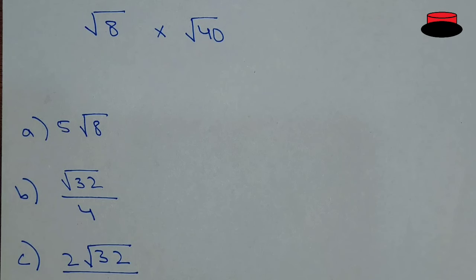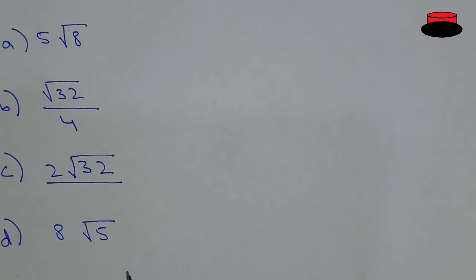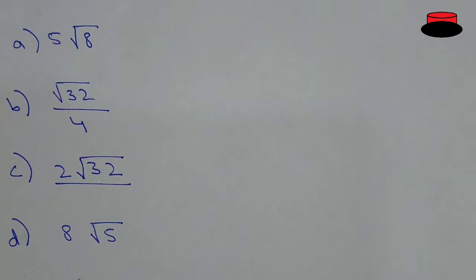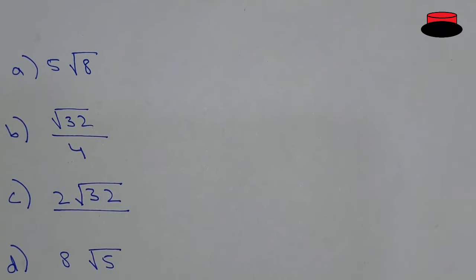We are given four options: 5 under root 8, under root 32 divided by 4, 2 root 32, and 8 under root 5.